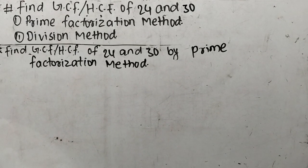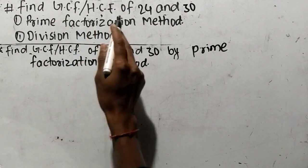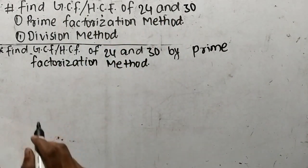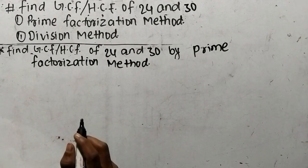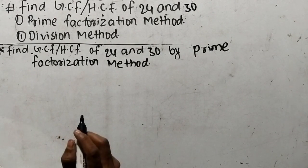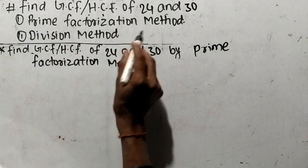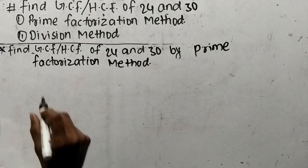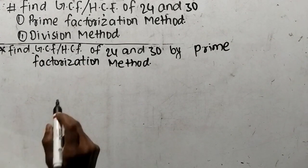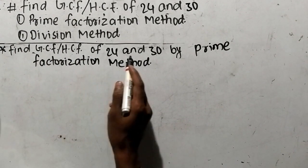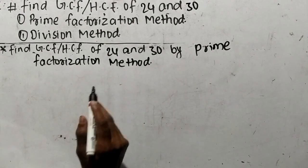Today in this video we shall learn to find GCF or HCF of 24 and 36 by two methods: first by prime factorization method, and second by division method. So let's find out GCF or HCF of 24 and 30 by prime factorization method.